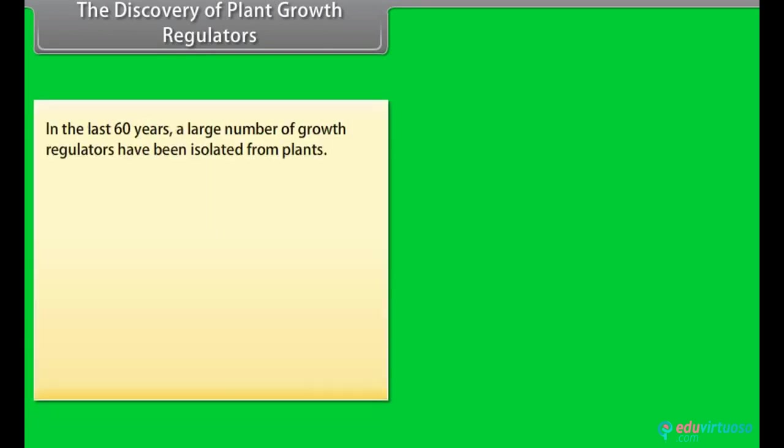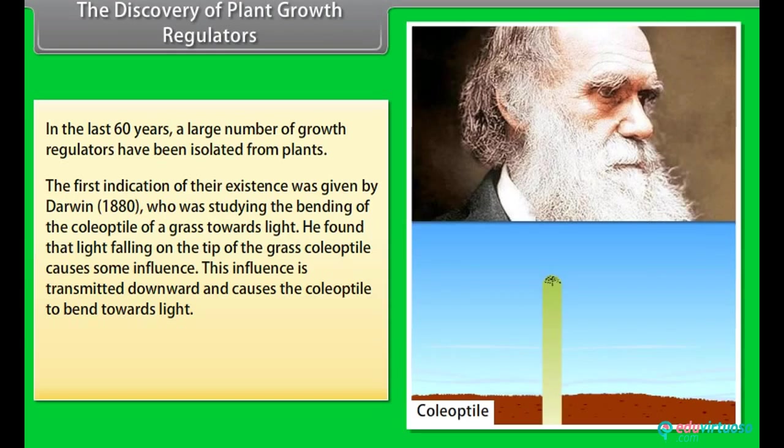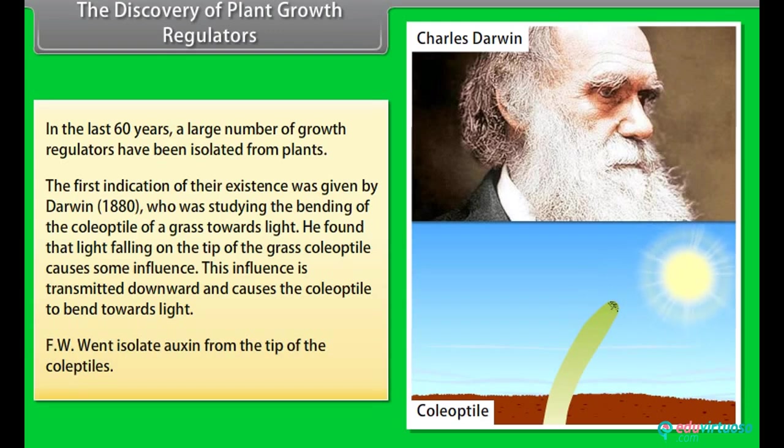The discovery of plant growth regulators. In the last 60 years, a large number of growth regulators have been isolated from plants. The first indication of their existence was given by Darwin, 1880, who was studying the bending of the coleoptile of a grass towards light. He found that the light falling on the tip of the grass coleoptile causes some influence. This influence is transmitted downward and causes the coleoptile to bend towards light. F.W. Went isolated auxin from the tip of the coleoptiles.